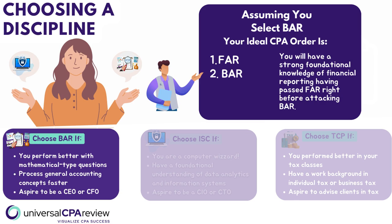So now that you've passed the FAR section, you've developed an expertise and you're set to conquer the BAR section. Your financial reporting skills from FAR are going to make your life a whole lot easier. You can now navigate through the maze that comes with business concepts and economic strategies in the BAR exam. Once you've knocked out the dreaded discipline, you can head right into the audit section and regulation section.